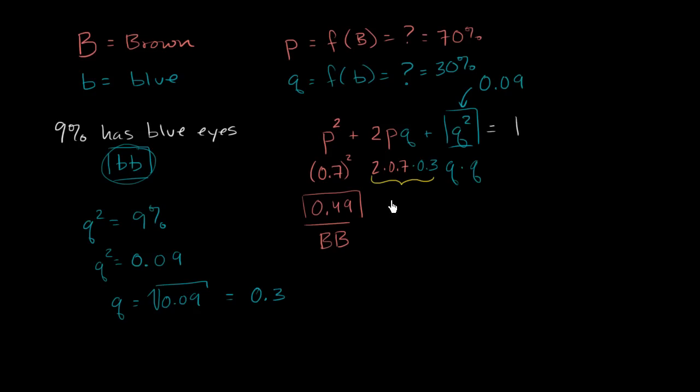Or another way to think about it is, 42% of this population is going to have the genotype uppercase B and lowercase b. And you see they all add up. 49% plus 42% is 91% plus 9% all adds up to 1, all adds up to 100%. So you get a little bit of information here, and based on what we know about allele frequencies, making a few assumptions, we're able to get a lot more knowledge about this population.